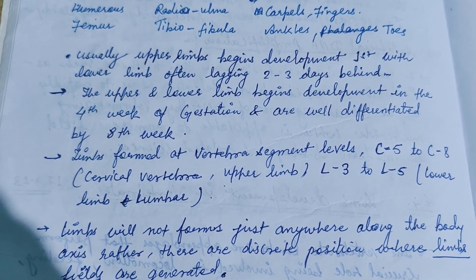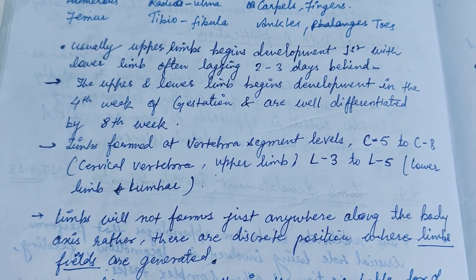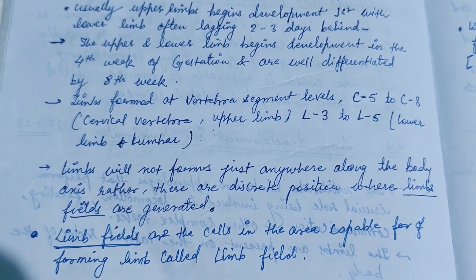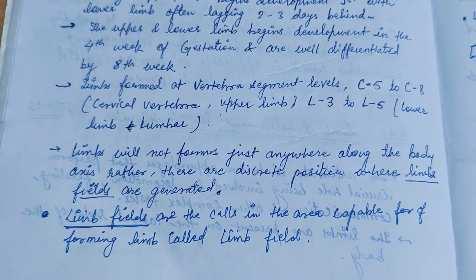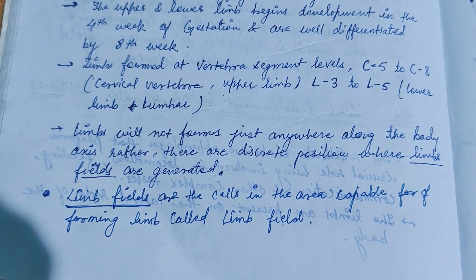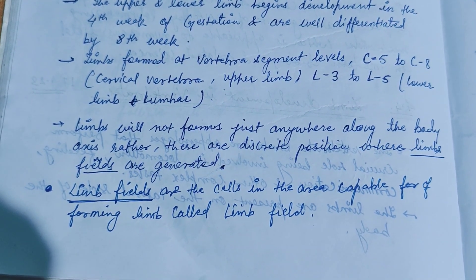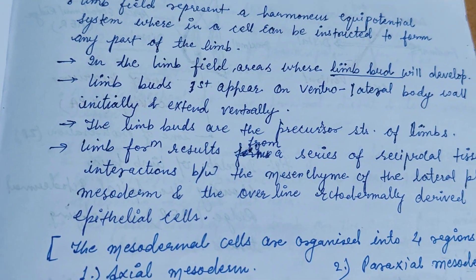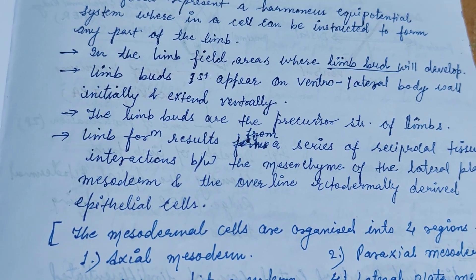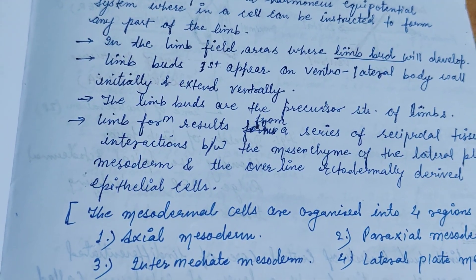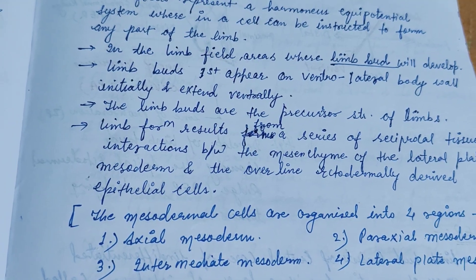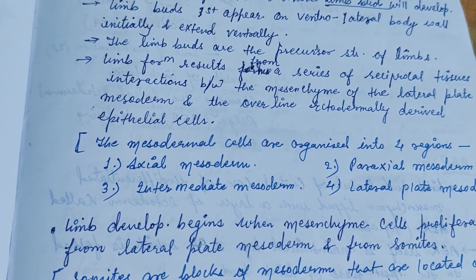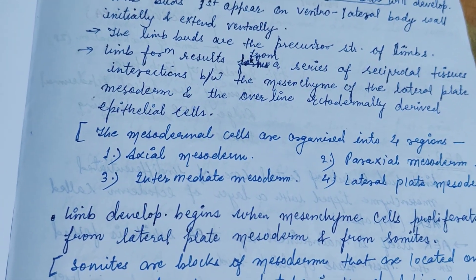Ankles and toes — limbs form at vertebral segment levels C5 to C8 (cervical 5 to cervical 8) for the upper limb, and lumbar 3 to lumbar 5 for the lower limb. Limbs will not form just anywhere along the body axis; rather, there are discrete positions where limb fields are generated. The limb fields are the first cells which form the forelimb or the hind limb. In the limb field areas where the limb bud will develop, limb buds first appear on the ventrolateral body wall initially.